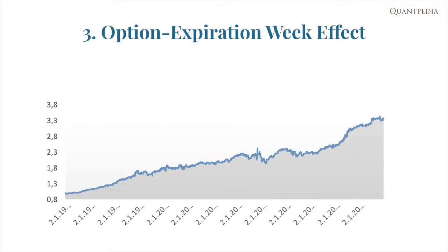As the name of the third anomaly suggests, this effect is another calendar anomaly. This one is connected with the Option Expiration Week, which is the week before Options Expiration. Option Expiration Day is the Friday before each third Saturday in each month. Research suggests that stocks with large market capitalization that have actively traded options tend to have substantially higher average weekly returns during these Options Expiration weeks. An investor buys the SPY ETF on the close each Friday before the second Saturday in a month and sells it on the close the following Thursday.